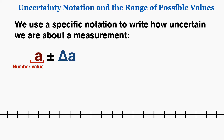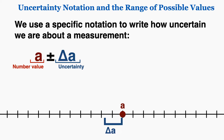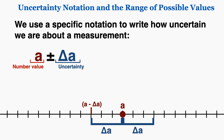This is the actual number value of our measurement, and this is the uncertainty of our measurement. What these symbols physically represent is that we have some measurement A, but we're not sure that the measurement is at that exact value. It could be delta A smaller than A, so the smallest possible value would be A minus delta A, or it could be delta A larger than A.